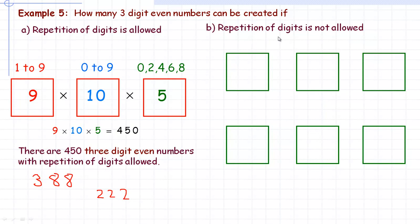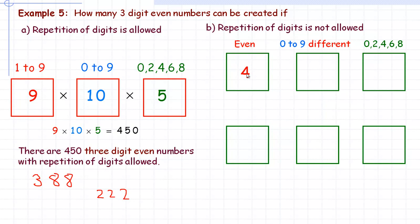When repetition is not allowed, there are two cases. Case 1: the hundreds digit is even. It can be 2, 4, 6, or 8 — that's 4 choices (not 0, since it's the leading digit). Since one even digit is used in the hundreds place, there are only 4 remaining even choices for the ones digit. Two digits are now used, leaving 8 choices for the tens digit. So: 4 times 8 times 4 equals 128 three-digit even numbers starting with an even hundreds digit.